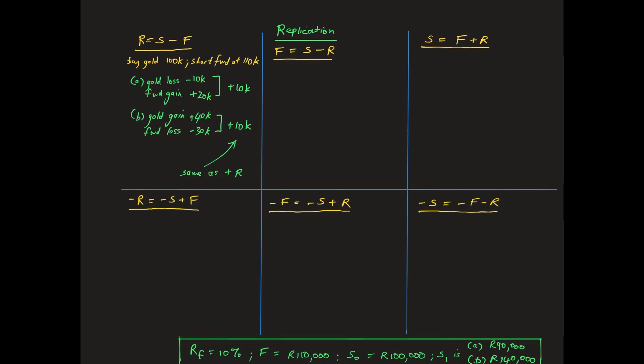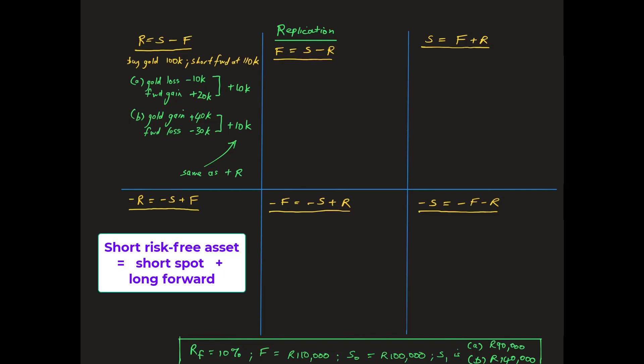In the bottom left-hand corner, all signs are reversed to show that a short position in the risk-free asset, which is exactly the same thing as borrowing at the risk-free rate, is replicated by a short position in the spot market, which is also called a short sale, and a long position in the forward market.